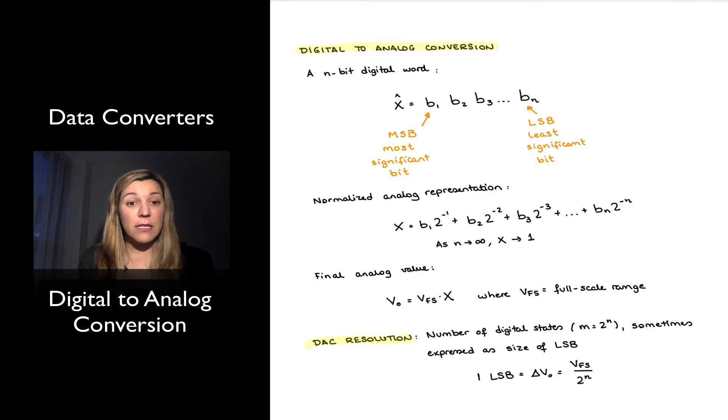Once I have my digital signal, which is the input to my digital to analog conversion system, represented as a sequence of bits, I can go ahead and generate the normalized analog representation of the signal. And I can compute the normalized analog representation as follows. My x is going to be equal to b1 times 2 to the minus 1, plus b2 times 2 to the minus 2, plus b3 times 2 to the minus 3, all the way to bn times 2 to the minus n. Notice that the bit that carries the most weight, because it's multiplied by the largest number, is b1, which is the most significant bit, and the one that carries the least weight is the bn, which is the least significant bit.